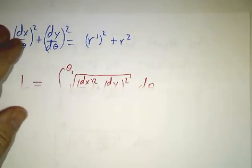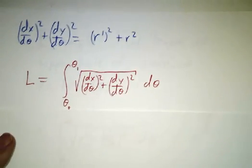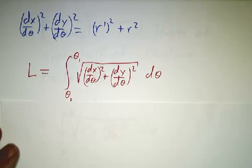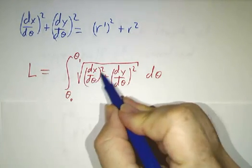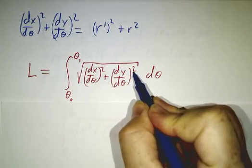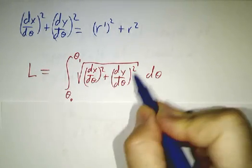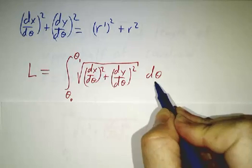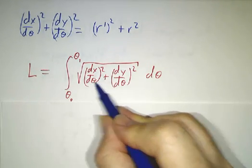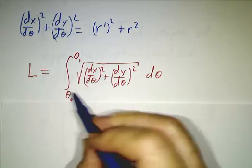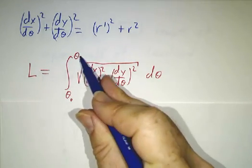And now we know how to figure out arc length. Our formula for arc length from parametrized curve is we take dx dθ squared plus dy dθ squared all square rooted integrate dθ. Well now our parameter is called θ instead of t. We take it from our starting value of θ to our ending value of θ.